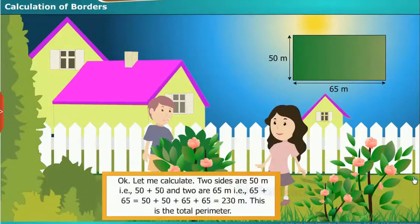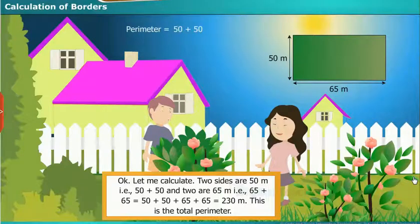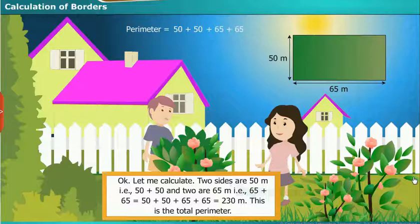Okay, let me calculate. Two sides are 50 meters, that is 50 plus 50. And two are 65 meters, that is 65 plus 65. Is equal to 50 plus 50 plus 65 plus 65, which is equal to 230 meters is the perimeter.